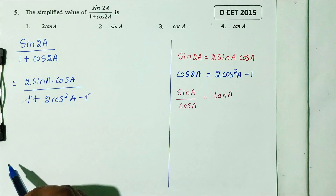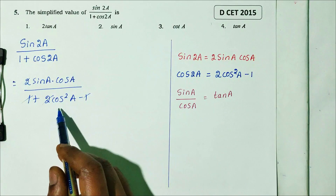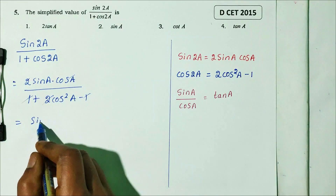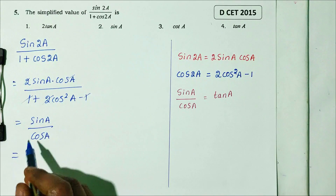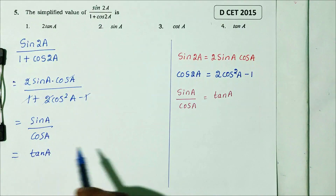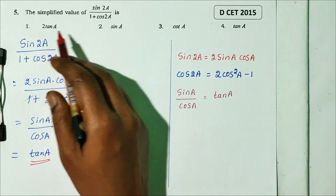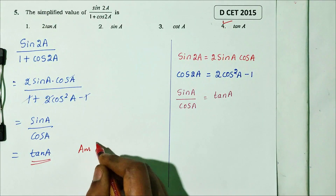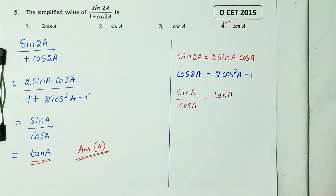Substituting: 2sinA·cosA divided by 2cos²A. The 2 and cosA cancel, leaving sinA divided by cosA, which equals tanA. So the answer is tanA, which is option 4. That is the right answer for DCT 2015.